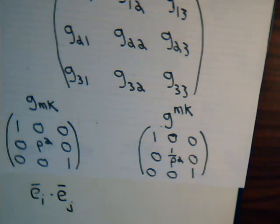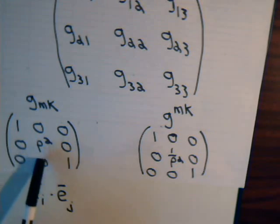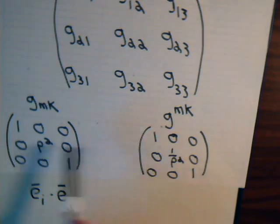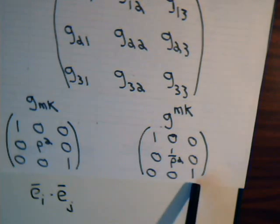Now, with cylindrical coordinates here, it's simple to find the inverse of this matrix. All we have to do is take the reciprocal of the diagonals. So, for the contravariant metric tensor, g11 is 1, g33 is 1, and g22 will be 1 over rho squared.